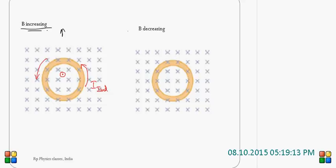On the right-hand side, B is decreasing. When the magnetic field is decreasing, the flux inside the coil also decreases. Lenz's law will now act to oppose this decrease by inducing current in the opposite sense.